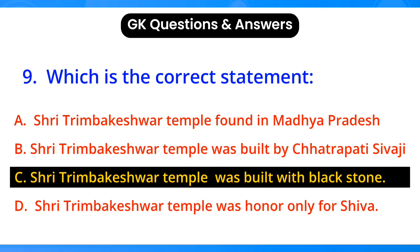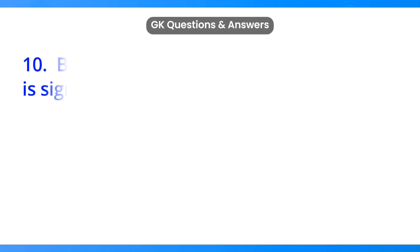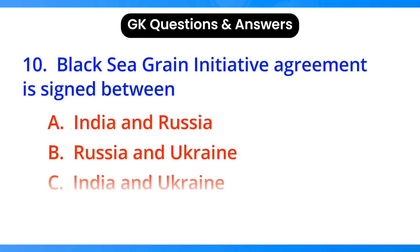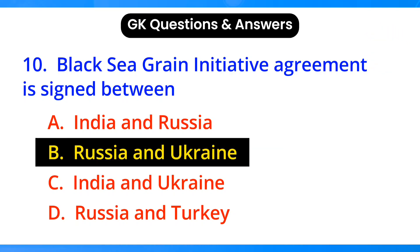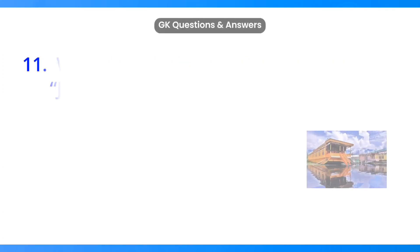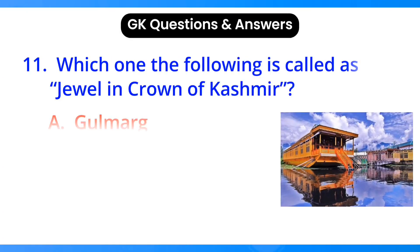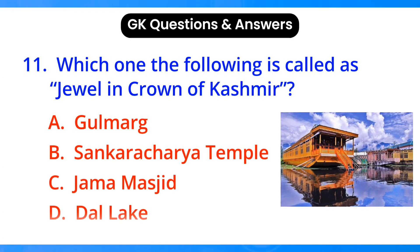Which is the correct statement? Answer: option B, Russia and Ukraine. Which one of the following is called the jewel in the crown of Kashmir? Answer: option D, Dal Lake.